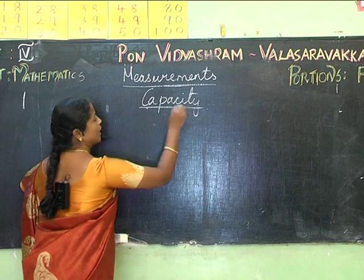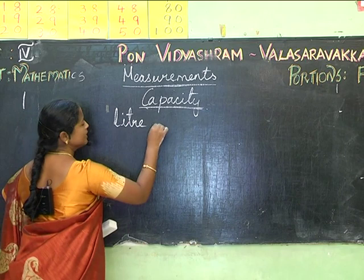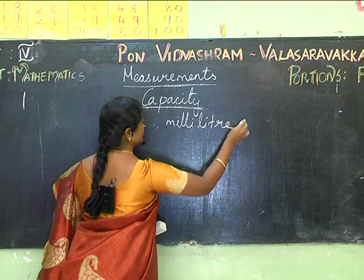We measure liquids as liters and milliliters. We use the units liter and milliliter, which can be expressed as L and mL.